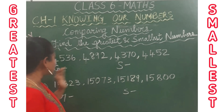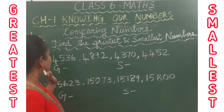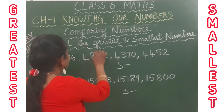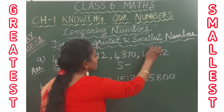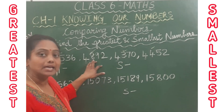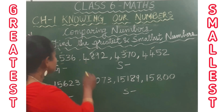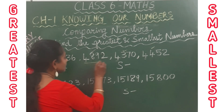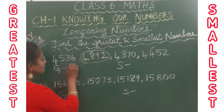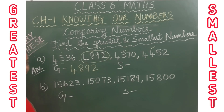We will proceed to the hundreds place. You have to find the biggest number in the hundreds place: 5, 8, 3, 4. The digit 8 is the biggest number — it means the greatest digit. So 4,892 is the greatest number.